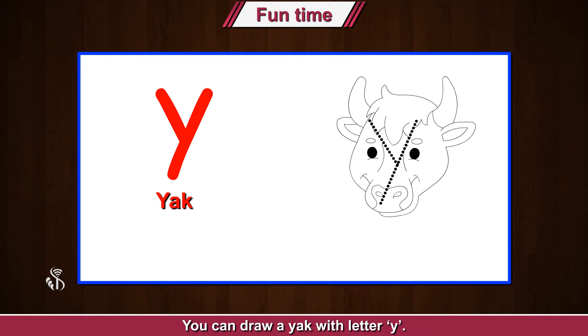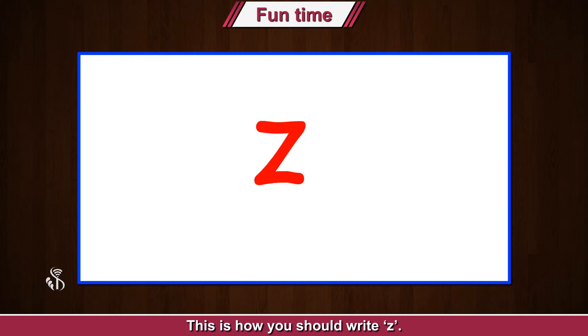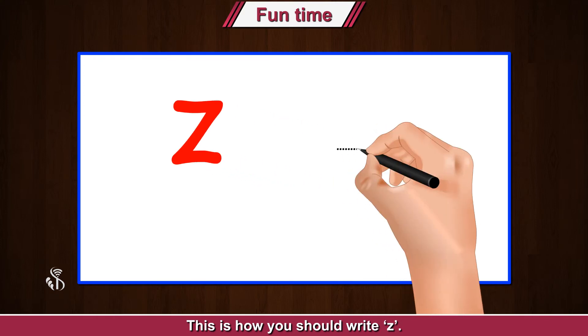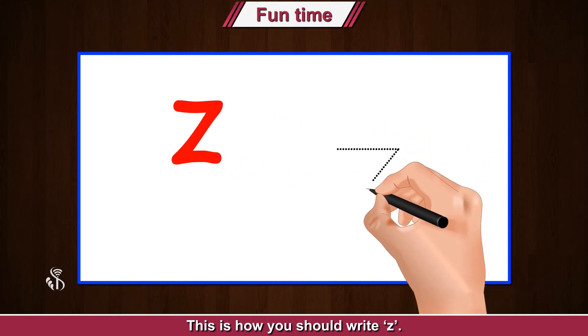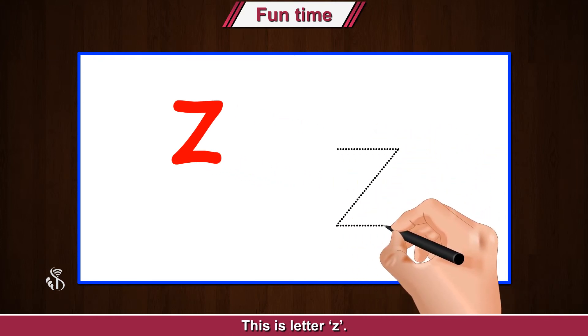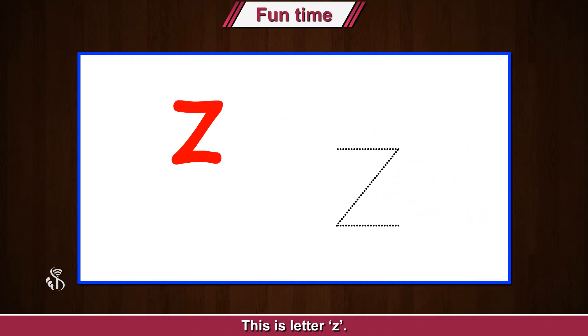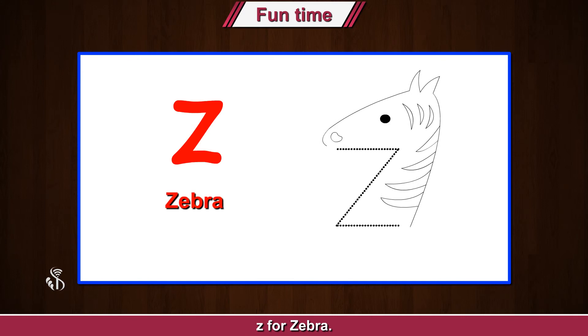This is how you should write Z. This is letter Z. Z for zebra — you can draw a zebra with letter Z.